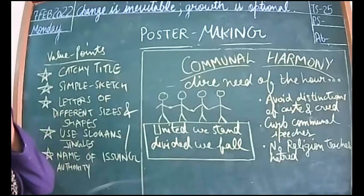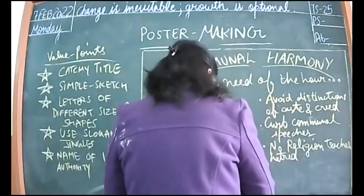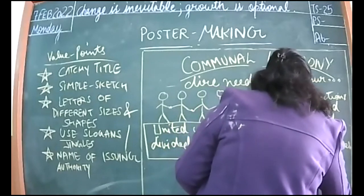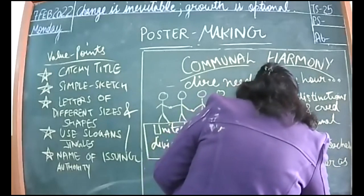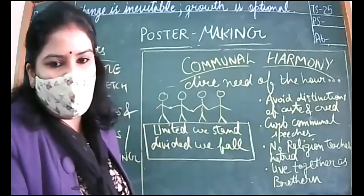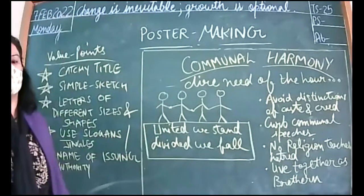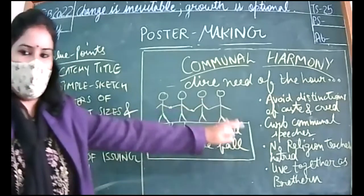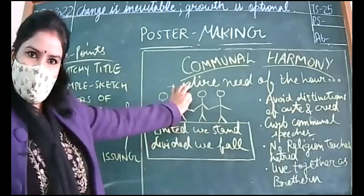In this our content is only messages for the society. No religion teaches hatred. This is sufficient, or any other idea coming to your mind you can add that also. Love and live together. Live together as brotherhood - brotherhood means you should show brotherhood. Live and let live also you can write. Live together as brotherhood. A religion superior of all is humanity. Yes, that can also be there. Humanity is the superior religion, you can write that. So we have content, we have stick figures, we have a slogan, we have a title. What is left?